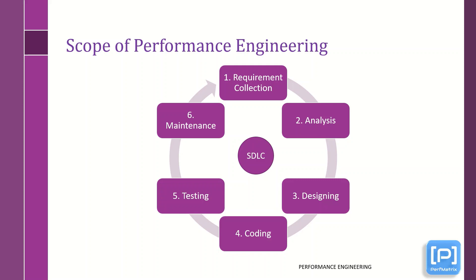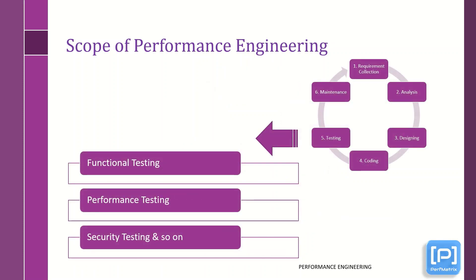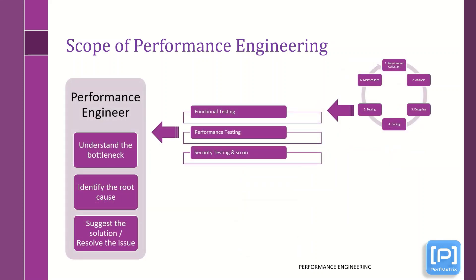Now let's discuss the scope of performance engineering. Here you can see the typical software development lifecycle which shows all the phases of SDLC, from requirement collection to maintenance. In this model, performance testing falls under the testing phase where various types of other testing are also conducted. As a typical approach, we think that performance engineering comes into the picture when performance testing starts, and the purpose of the performance engineer is to analyze the test results and understand the bottleneck by identifying the actual root cause and then suggesting the solution to resolve the issue. Actually, it is not the case.